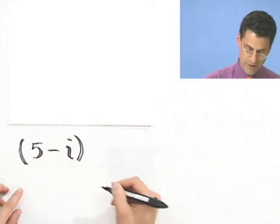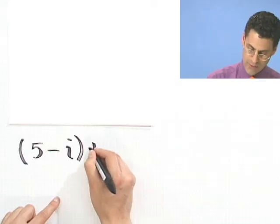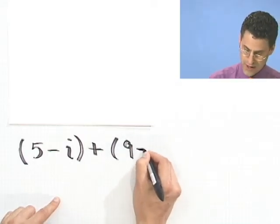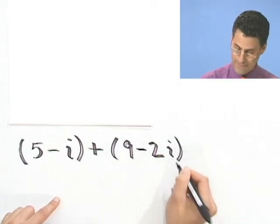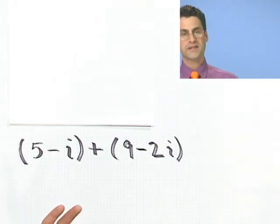So suppose I have the complex number 5 minus i, and I want to add it to 9 minus 2i. How would you combine these things?